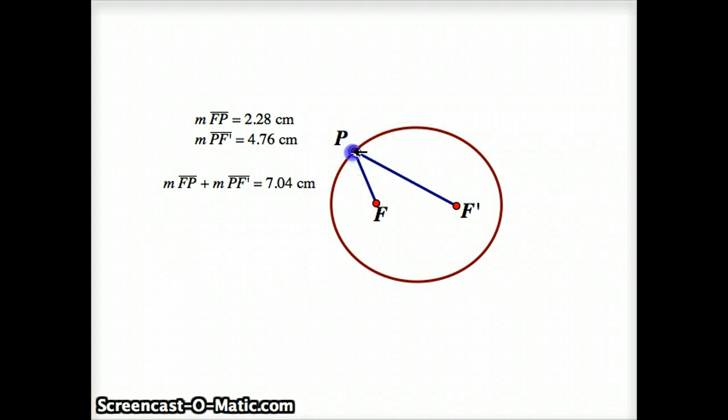Watch what happens as I move P around. The FP and PF prime, those change, but the 7.04, which is being constantly recalculated, is staying as 7.04. So that's property of an ellipse that any point on the ellipse has the property that the sum of the distances to the two foci is a constant. In this case, that constant is 7.04.